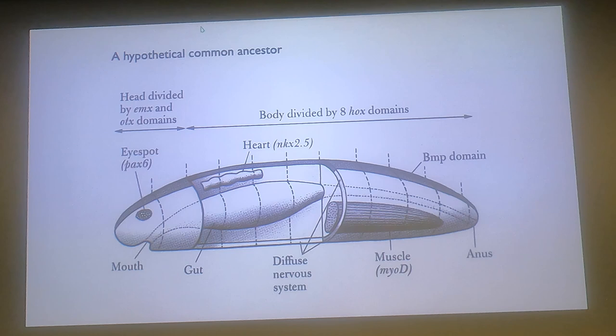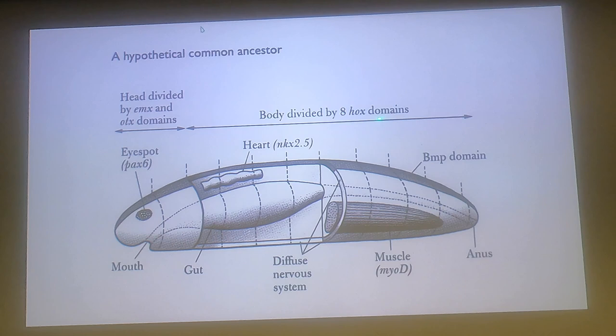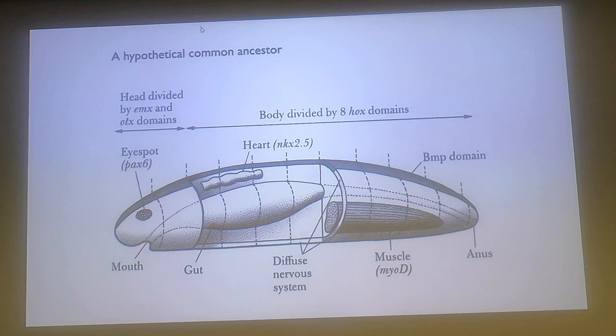So where we left off last time, I had introduced you to this idea that when we look at animals - and this is true for basically all animals - there are a few general rules that we can see that are consistent across all these different animal groups. One is that we've got these Hox genes, these homeobox-containing genes, that demonstrate a spatial distribution of expression. There's something fundamental going on there.